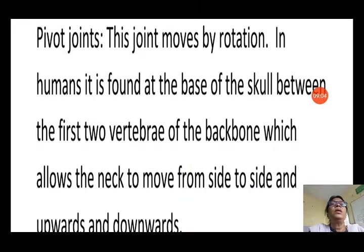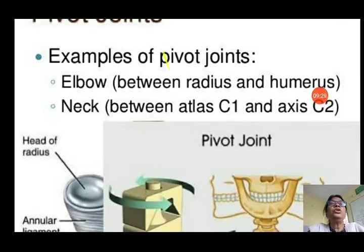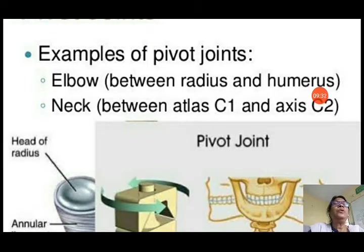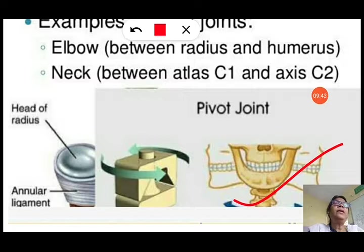Third: pivot joint — this joint moves by rotation. In humans it is found at the base of the skull, between the first two vertebrae of the backbone (C1 and C2), which allows the neck to move side to side and up and down. You can see in the picture how the neck is fixed at the first and second vertebrae.